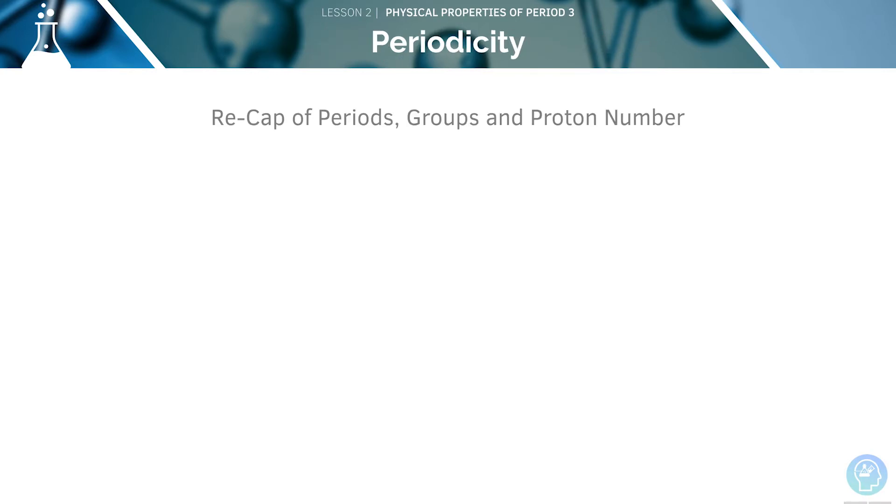Let's have a recap of periods, groups, and proton number. We'll cover atomic radius, melting point, and ionisation energy.